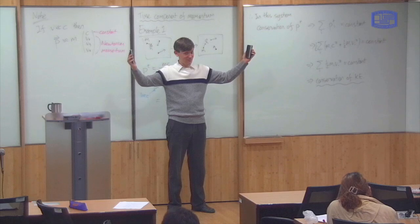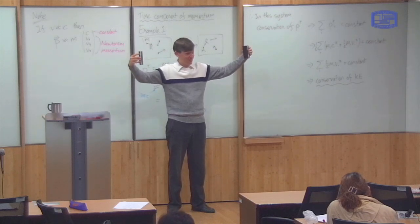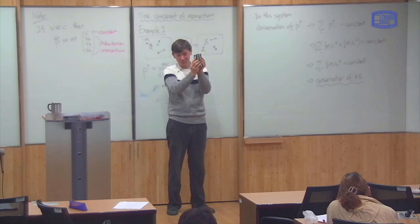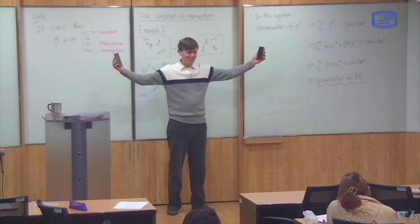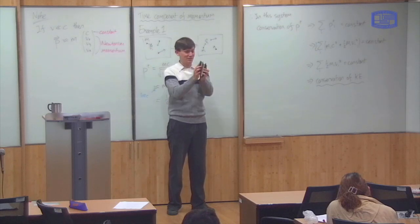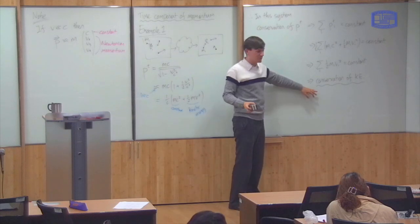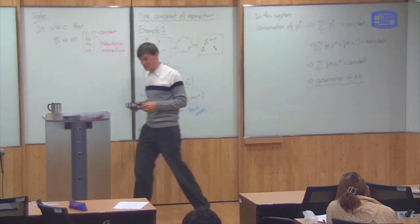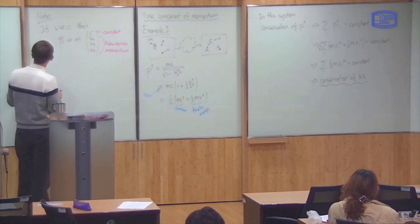So total momentum is conserved because the Newtonian momentum is conserved in the x, y, and z directions — this momentum is minus that momentum, so the total is zero. But kinetic energy is not conserved, because before the collision these are moving and have kinetic energy, but after the collision they don't. So conservation of Pt says conservation of kinetic energy, but that's not always true. There are systems where kinetic energy is not conserved, so next I want to look at a system like that.